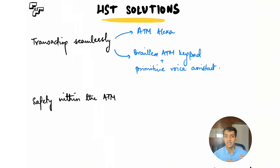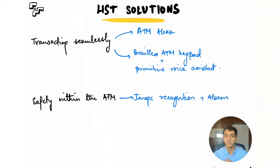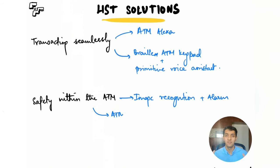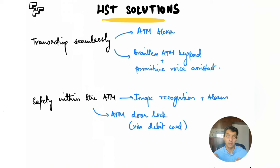For the safety need, the first solution is a camera with image recognition that identifies if more than one person is inside the ATM and raises an alarm — preventing someone from sneaking in to steal money during a transaction. The second solution is an ATM door lock accessible only via a special card issued to visually impaired people. Once inside, the user swipes the card to lock the door, transacts securely knowing nobody can enter, and then unlocks the door from inside when done.